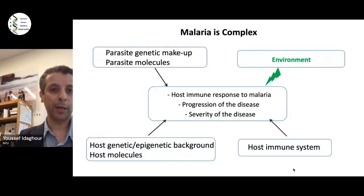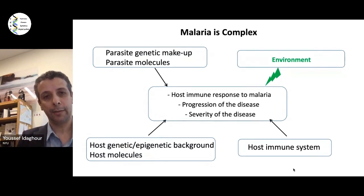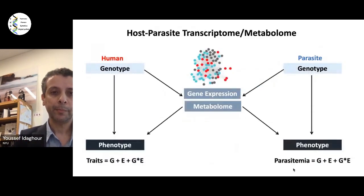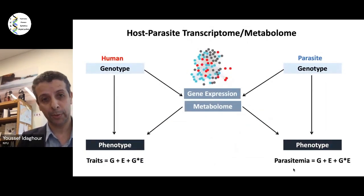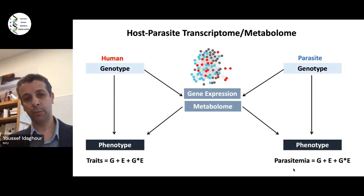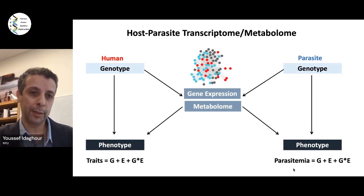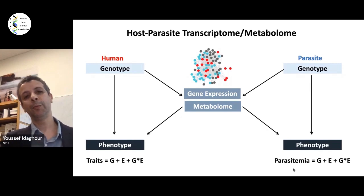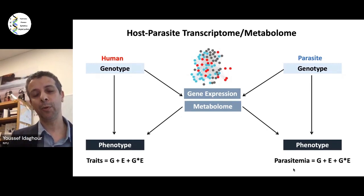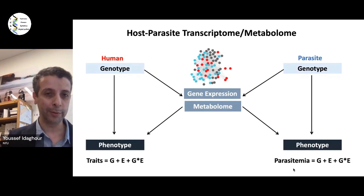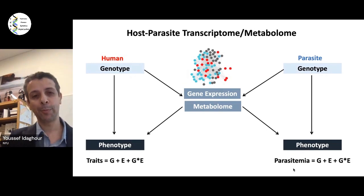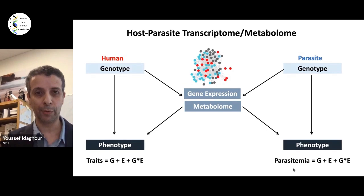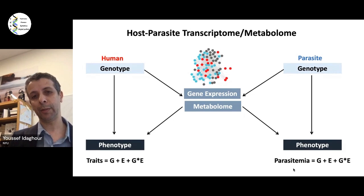The focus of our studies has been transcriptomics and gene expression profiling over the last decade, and more recently we've been transitioning to looking at other types of functional outputs like the metabolome. It's fascinating when you think how two organisms — one with a few thousand genes and one with 22,000 protein-coding genes — interact with each other during the course of infection, because these interactions define the outcome of the infection.